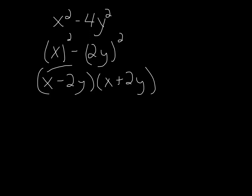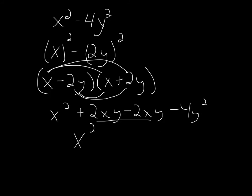Let's just multiply this out just so we can see. So we get x squared plus 2xy minus 2xy minus 4y squared. And we get x squared. Those cancel. Minus 4y squared. And we're good to go.